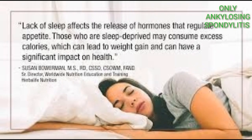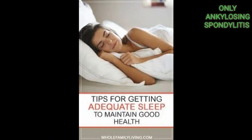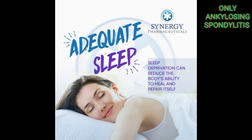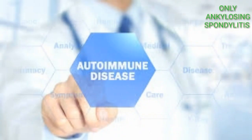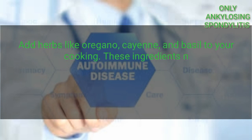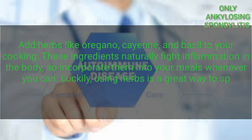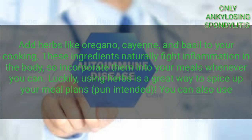Number 4, have adequate sleep: it is recommended to get 7–9 hours of sleep every night. In cases of not getting enough sleep, especially in chronic cases, inflammation occurs. As we all know, the body heals while we are asleep. Not sleeping as much as needed will prolong the recovery time or make the inflammation worse. Add herbs like oregano, cayenne, and basil to your cooking — these ingredients naturally fight inflammation in the body, so incorporate them into your meals whenever you can.